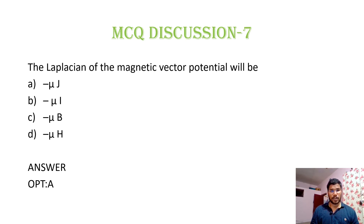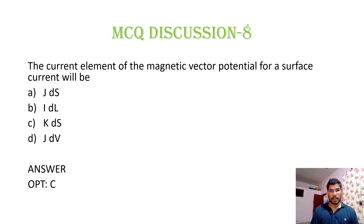MCQ 7: The Laplacian of a magnetic vector potential will be: option A, −μJ; option B, −μI; option C, −μB; option D, −μH. The Laplacian of the magnetic vector potential is del² A = −μJ. Option A is correct.